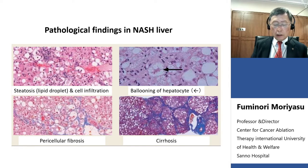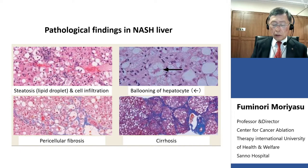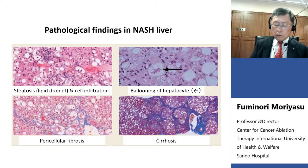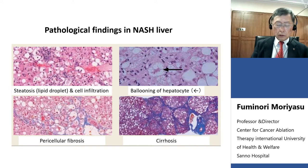This slide indicates that not only steatosis but also inflammation — mononuclear cell infiltration — and hepatocyte changes such as ballooning are part of the pathological diagnosis of NASH. As the disease progresses, fibrosis is seen in the lower left of this slide. This fibrosis is mainly pericellular fibrosis. Bridging fibrosis is seen as the disease advances, so fibrosis should be graded F2 to F3. Finally, thick fibrosis surrounding the pseudonodules leads to a diagnosis of cirrhosis.